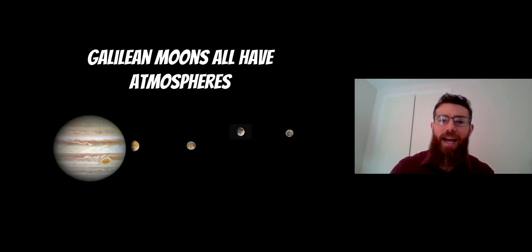So what moons actually have atmospheres? The four Galilean moons around Jupiter all have atmospheres. Starting from closest in, you've got Io, Europa, Ganymede, and then Callisto. They all have atmospheres of varying thicknesses and degrees, but four of Jupiter's moons we know have atmospheres.